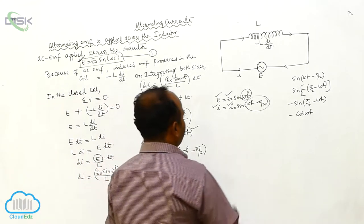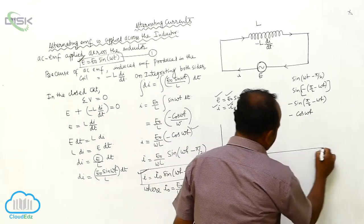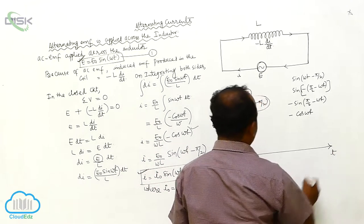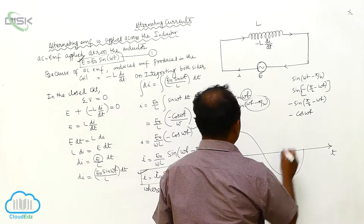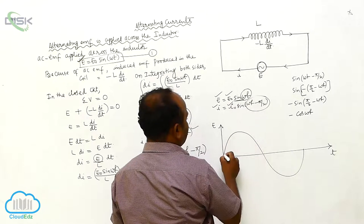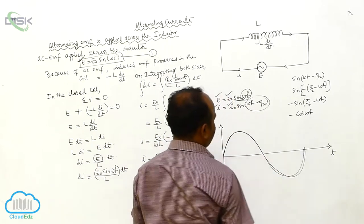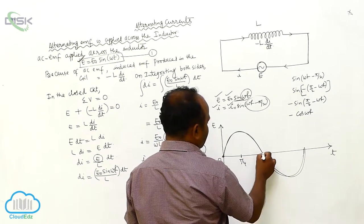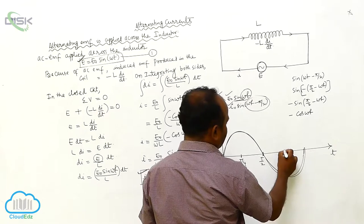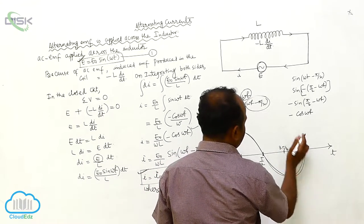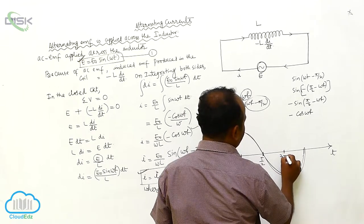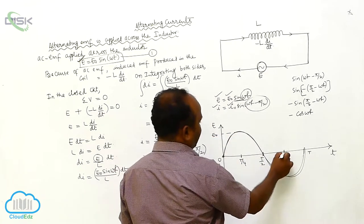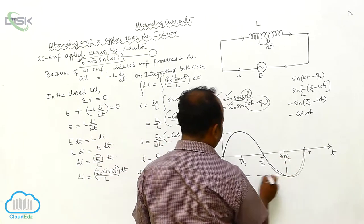The graphical representation is like this: the EMF is plotted against time. This is the sine function for EMF. At t/4, the maximum EMF is E₀, and at 3t/4, the maximum EMF is minus E₀. The current involves sin(ωt − π/2), so the current graph is shifted.